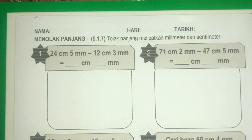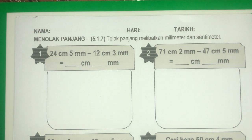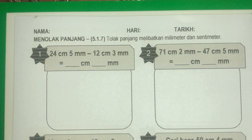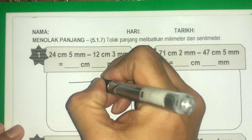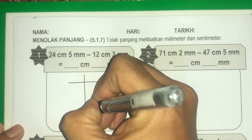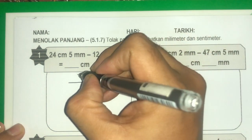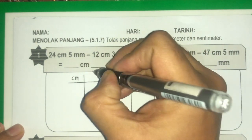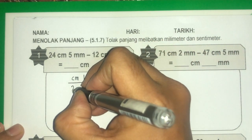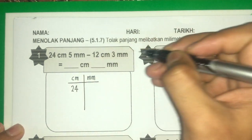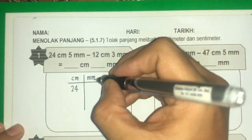Contoh soalan pertama: 24 cm 5 mm tolak 12 cm 3 mm. Jawapan sama dengan berapa cm dan berapa mm? Pertama sekali kita akan buat garisan pembahagi antara cm dan juga mm. Kemudian kita akan tuliskan nombor mengikut rumah masing-masing.